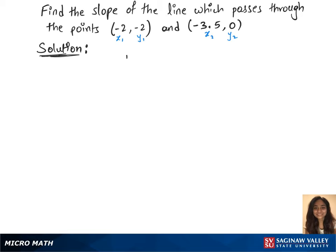The slope formula is m = (y₂ - y₁)/(x₂ - x₁). Let's plug in the points into the formula: m = (0 - (-2))/(-3.5 - (-2)).